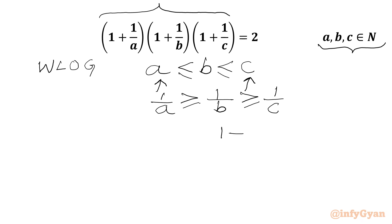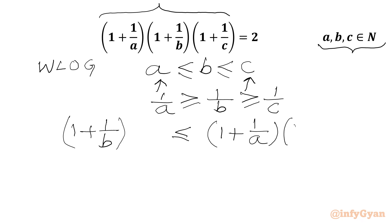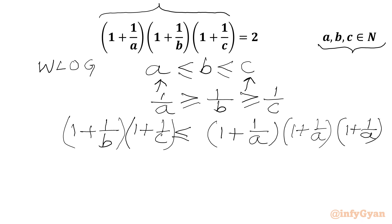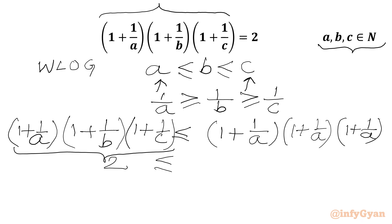Because 1/A ≥ 1/B, we have (1 + 1/A) ≥ (1 + 1/B). Multiplying through, we get 2 = LHS ≥ (1 + 1/A)³ on the RHS.